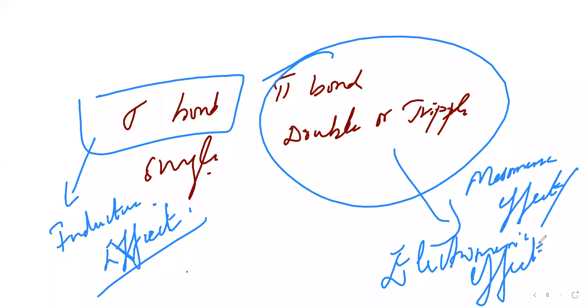If you see pi bond and inductive effect, it is wrong. Or if you see sigma bond and mesomeric effect, it's wrong. But if you see sigma bond and inductive effect, it is correct. So we have to choose those questions correctly.